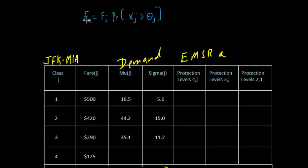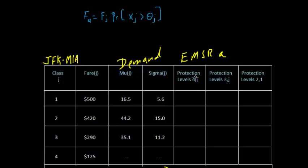The subscripts here — this is the fare for class 4. This subscript is not going to change. We're going to iterate through the J's. So we're going to calculate our first protection level for fare class 4 against 3, so J will equal 3. Then we'll calculate a protection level for class 4 against 2, so J will equal 2. And then finally for class 4 against 1, so J will equal 1. We'll have three different protection levels, and then we'll sum those up and we'll have our first EMSR protection level for this set of classes 3 and above.